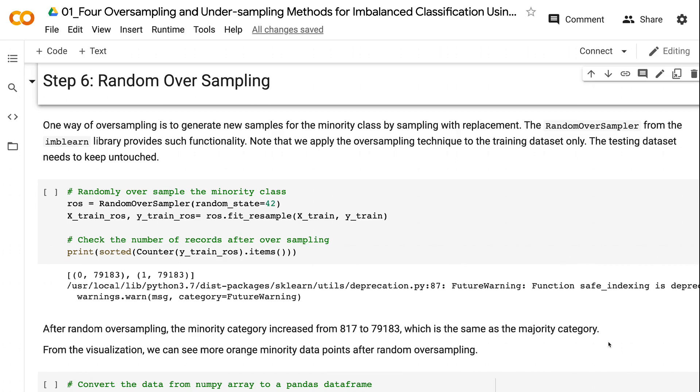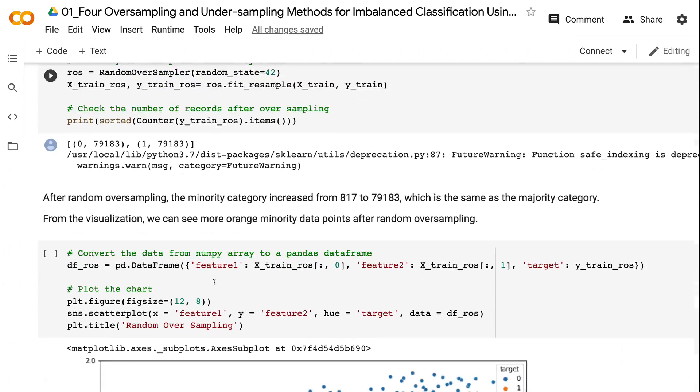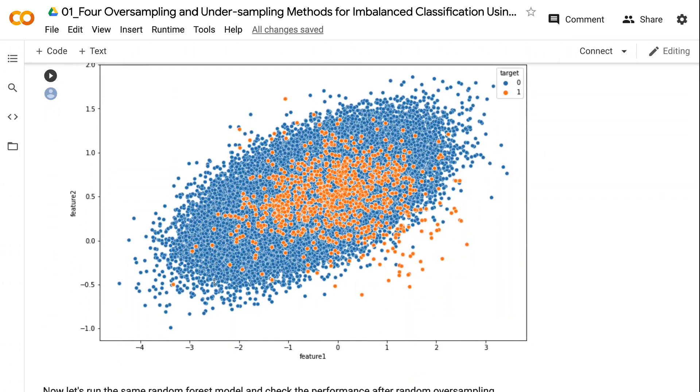After random oversampling, the minority category increased from 817 to 79,183, the same as the majority category. From the visualization, we can see more orange minority data points after random oversampling.